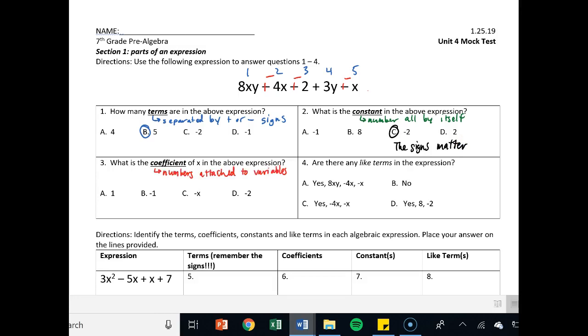Number three, what is the coefficient of x in the above expression? Coefficient is any number attached to variables. If I've got a coefficient of x, remember a variable by itself has a coefficient of 1 or negative 1, depending on its sign. So if I've got negative x, that means its coefficient is b, negative 1.